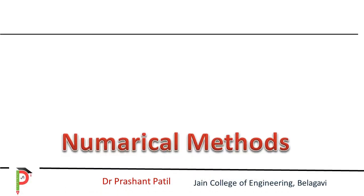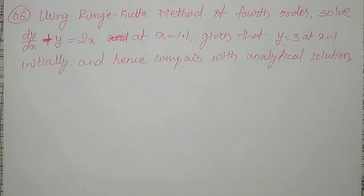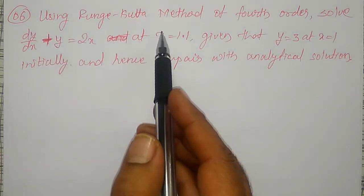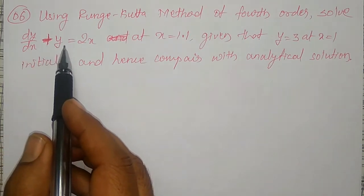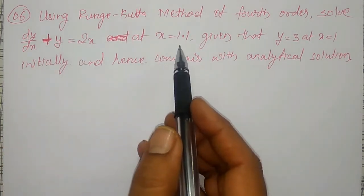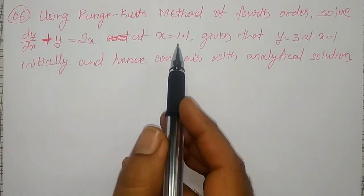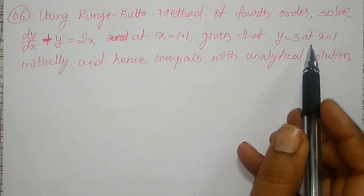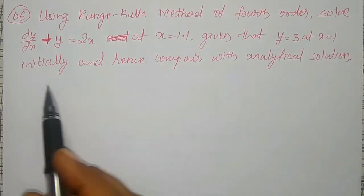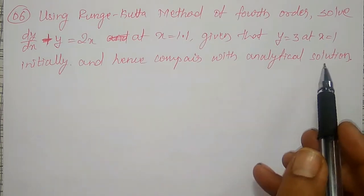In this video, one more example on Runge-Kutta method I am going to solve. That is, using Runge-Kutta method of fourth order, solve dy/dx plus y equal to 2x at x equal to 0.1. I have to solve this at x equal to 1.1, given that y equal to 3 at x equal to 1, and hence compare with the analytical solution.